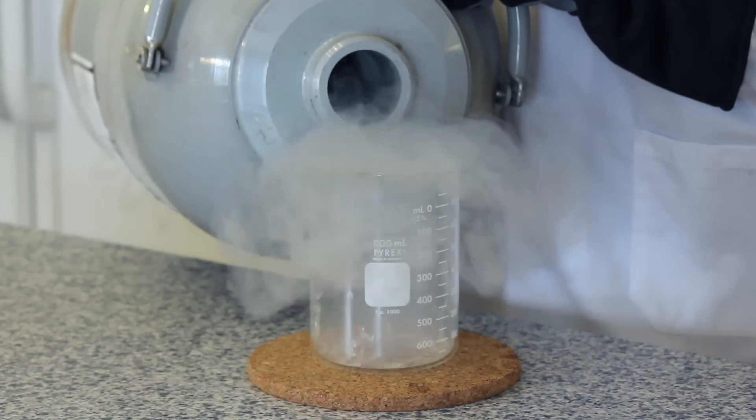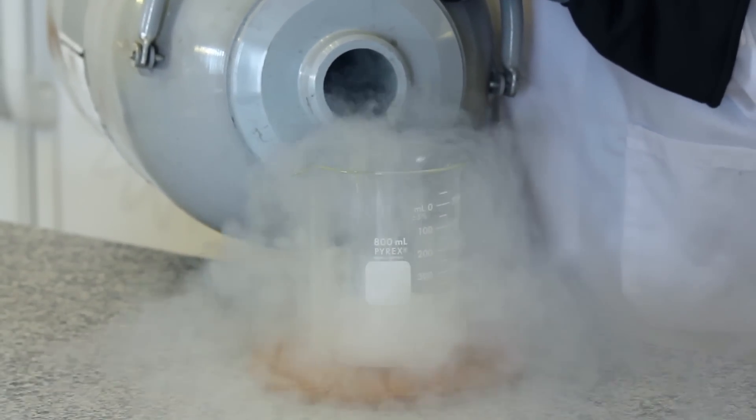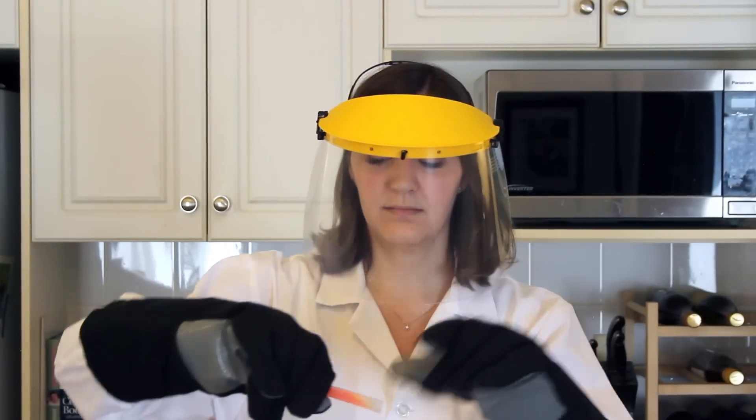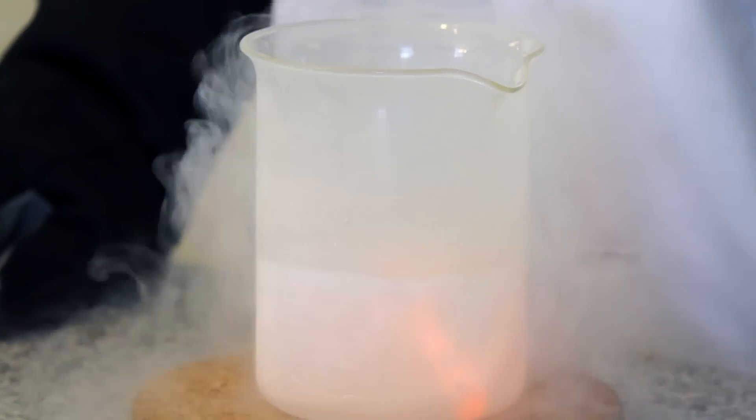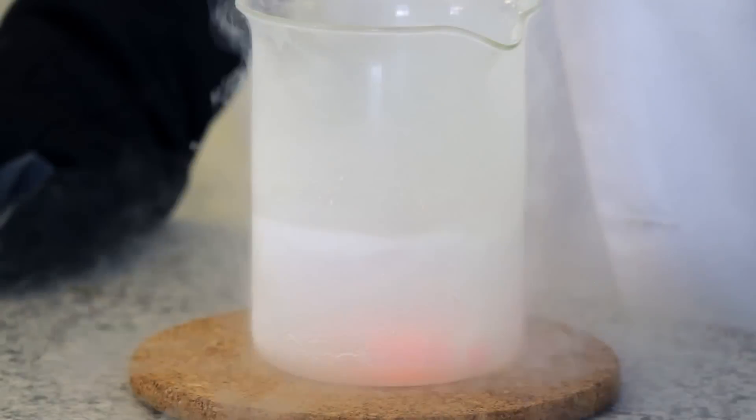With your safety equipment on, fill your beaker with liquid nitrogen. Next, we're going to activate our glow sticks by breaking them and then put them in the liquid nitrogen. Leave the glow stick in the liquid nitrogen for a few minutes.